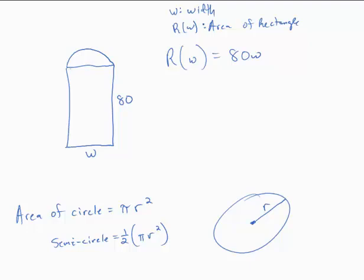But I do know that the diameter, the distance across, is W. So then the radius would be W over 2.